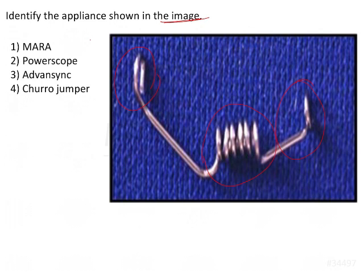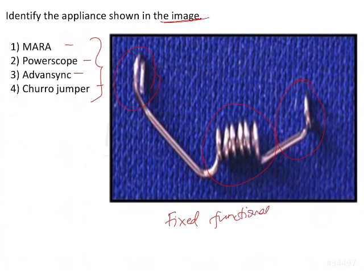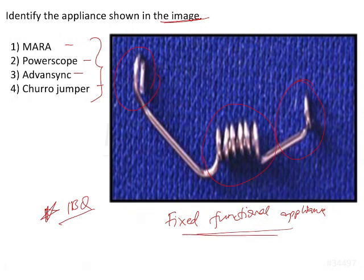This is a type of fixed functional appliance, which you can identify from the image as well as from the options: MARA, PowerScope, Advancing, and ChurroJumper. These are all types of fixed functional appliances given to advance the mandible. These image-based questions are very important, as they can ask you any of these options and you will have to identify it.